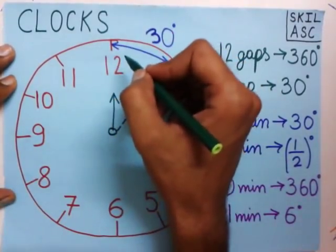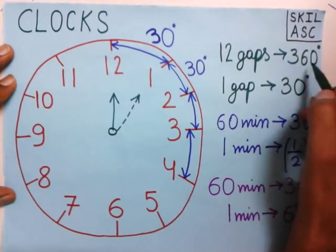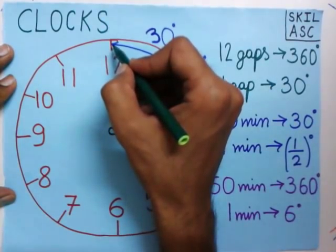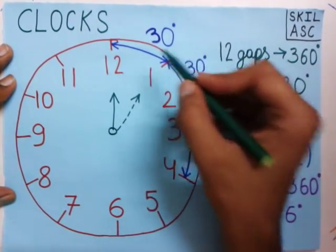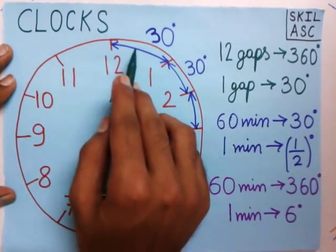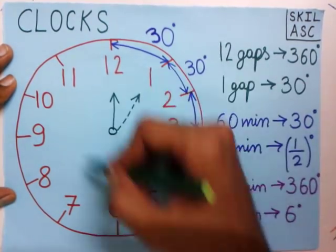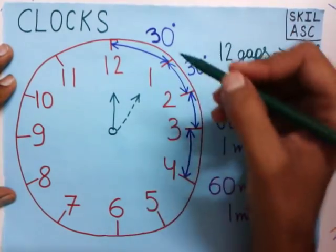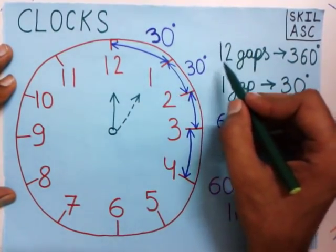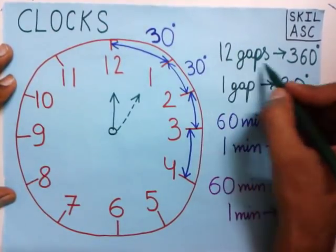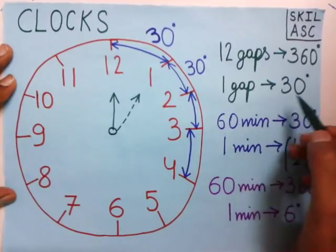This is a clock, and it is a circle. We all know a circle has 360 degrees. If you move from one point back to the same point it covers 360 degrees. Notice that between the numbers on the clock there are gaps. If you count, there are 12 gaps total all around the circle. So 12 gaps have 360 degrees, meaning one gap has 30 degrees.